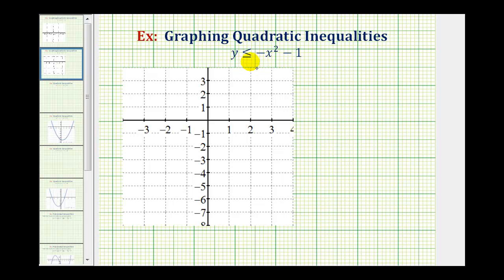But our first step is to graph y equals negative x squared minus one. Our graph will be solid or dashed based upon the original inequality symbol. Because we have y is less than or equal to negative x squared minus one, the points on the graph of y equals negative x squared minus one will satisfy this inequality and therefore we have to make a solid graph.